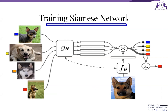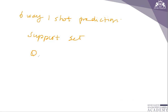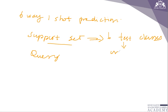Let me show you how a six-way one-shot prediction works. There are two things: a support set and a query. The support set has six test classes, each with one sample — for example: cat, dog, squirrel, cow, parrot, and lion. The training data for the Siamese network does not contain these six classes. The query is a dog, and we know the query must be among the six classes in the support set, so we need to choose one out of the six.